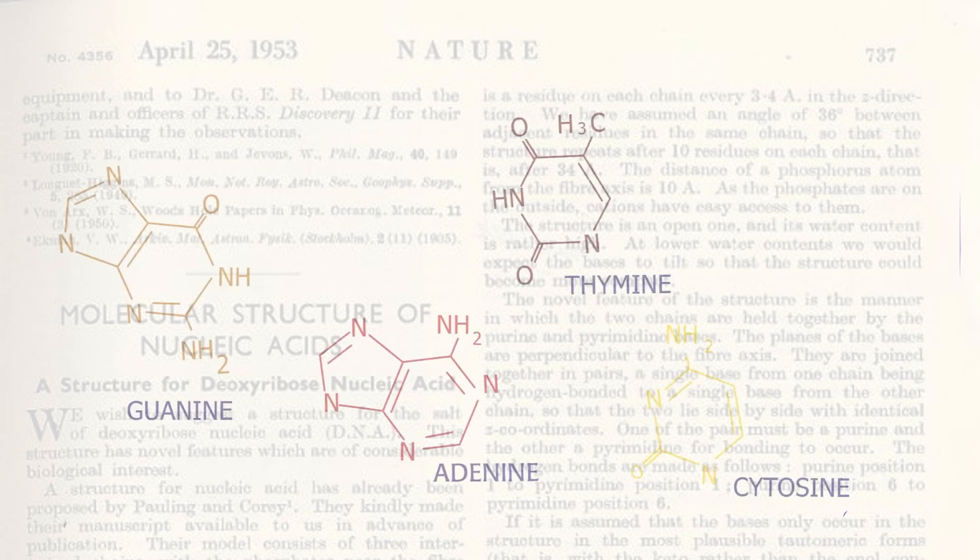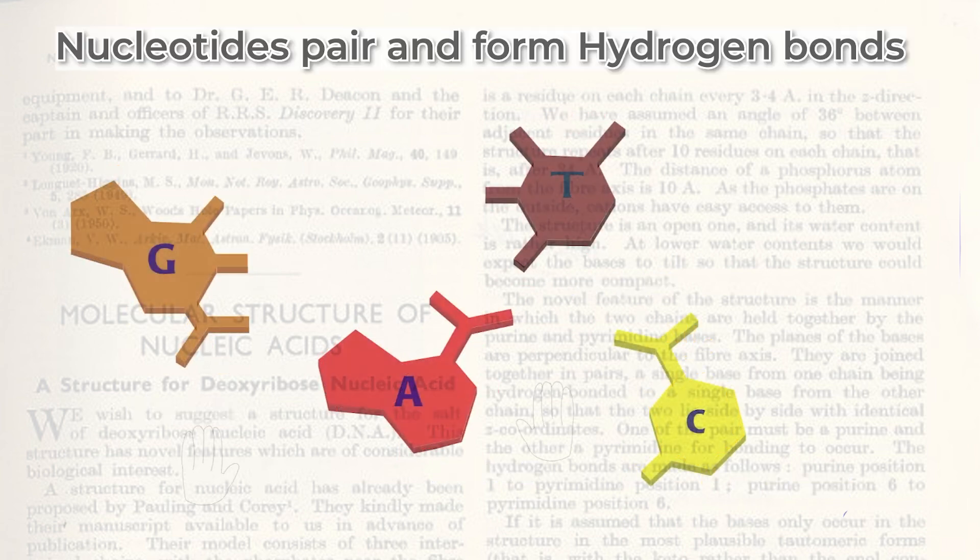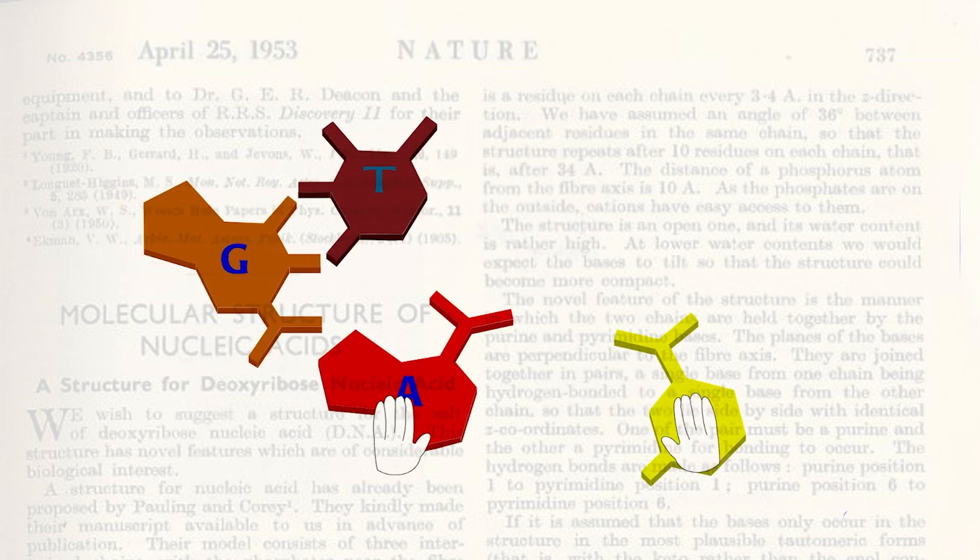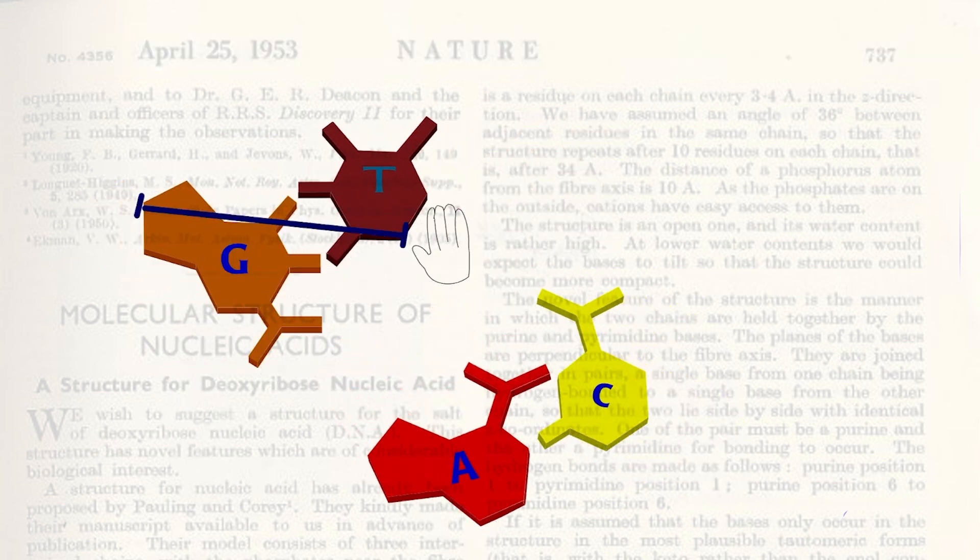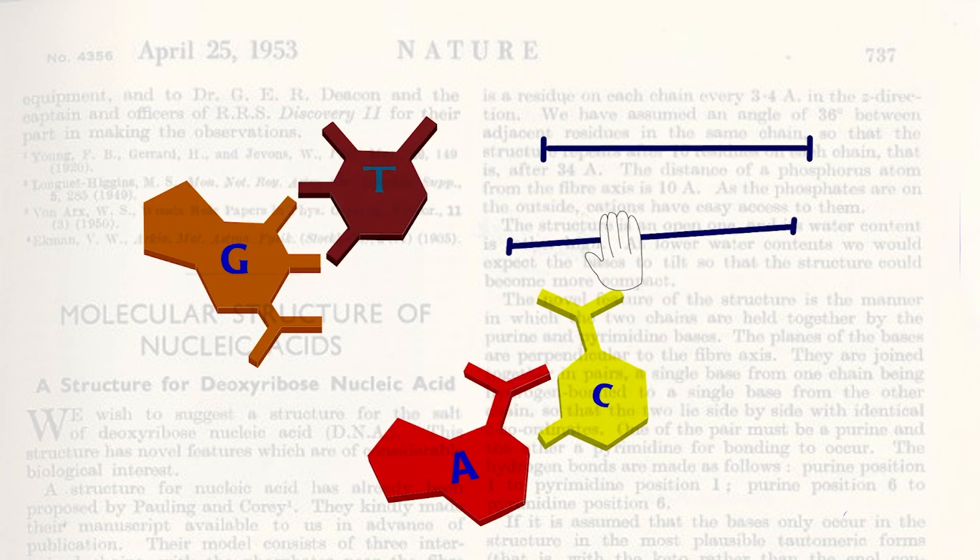Linus' mistake encouraged James and Francis to work harder. They began to play with paper cutouts of the nitrogen bases. James knew that nucleotides could pair and form hydrogen bonds, which are formed when nitrogen or oxygen shares a hydrogen atom. He started pairing nucleotides based on possible hydrogen bonds.